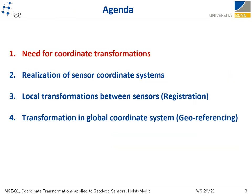This lecture will be separated into four small chapters. First, I will summarize the main geodetic tasks that require coordinate transformations. Then I will talk about how instrument-related coordinate systems of some sensors are realized, about transformations between different local sensor coordinate systems — often called registration — and finally about the transformation of these local coordinate systems into a global one, often called georeferencing, although it is practically the same thing as registration.